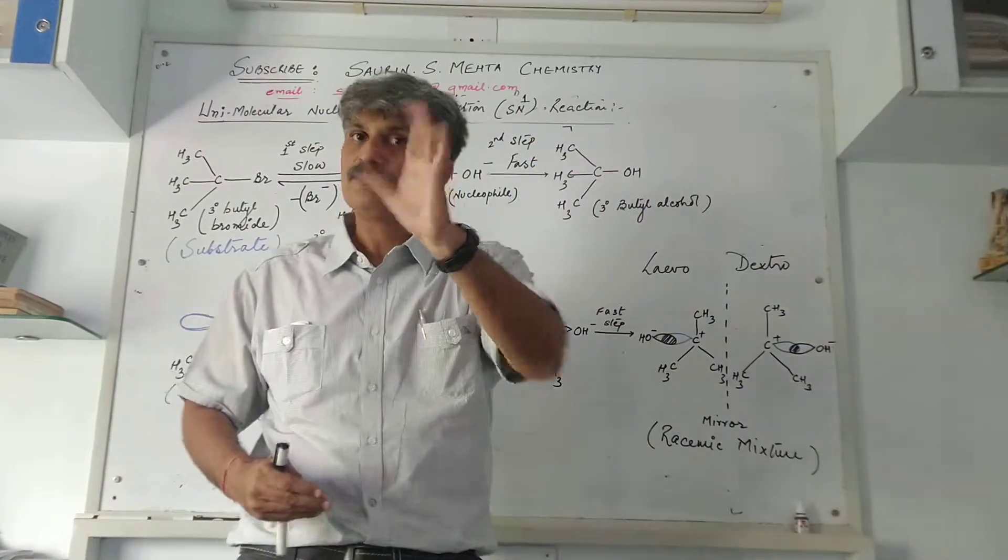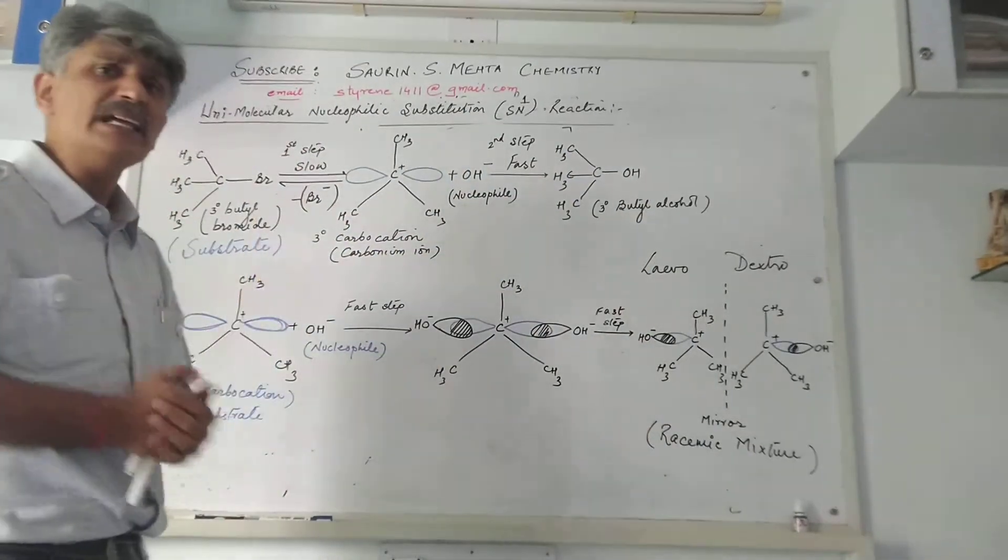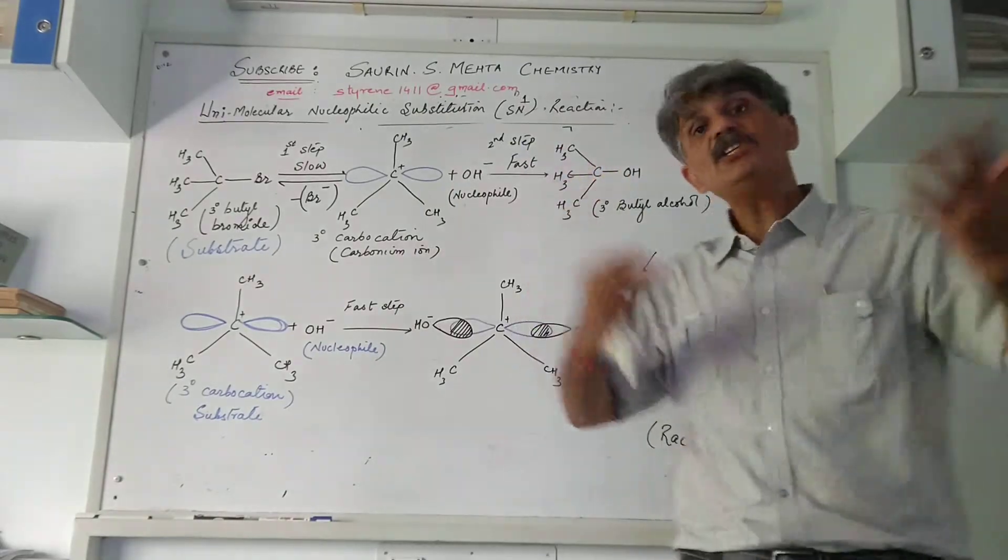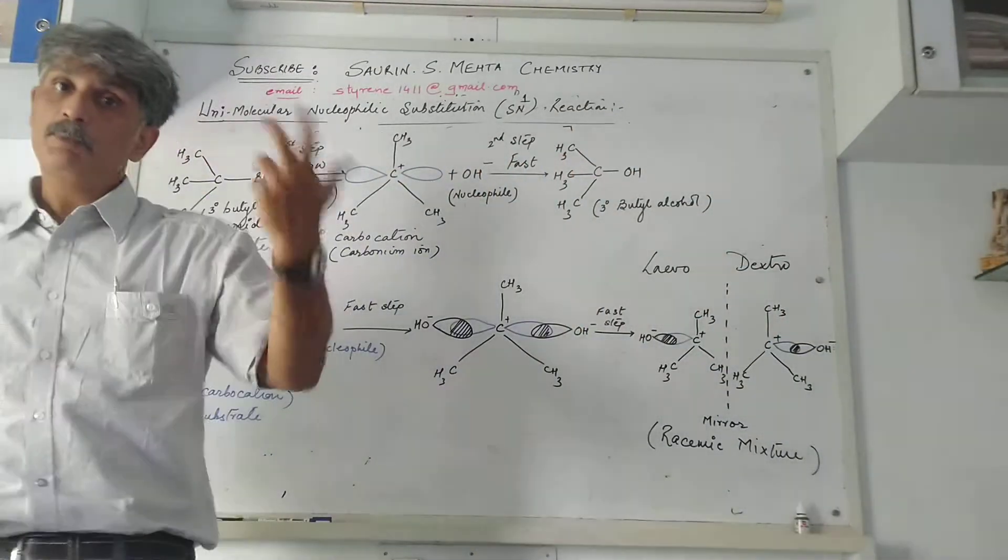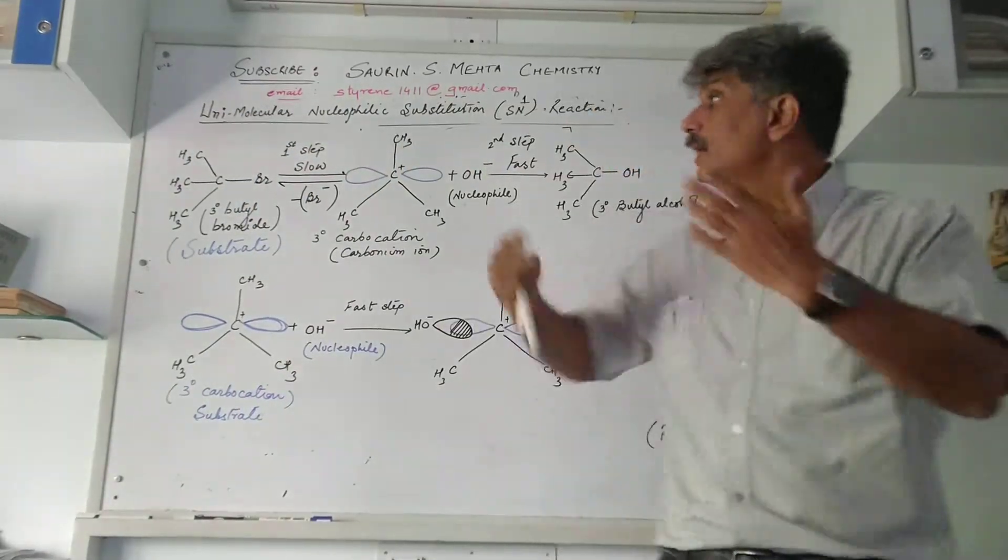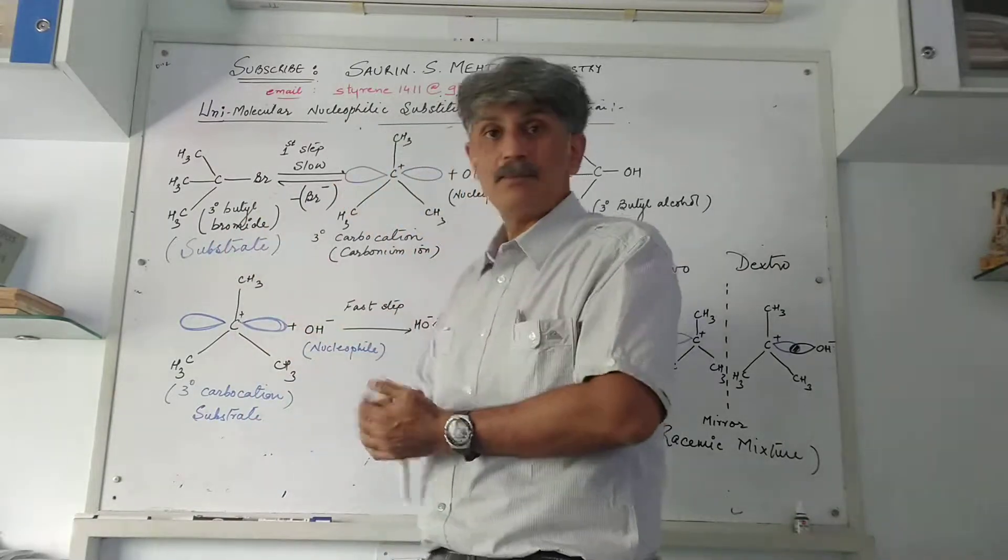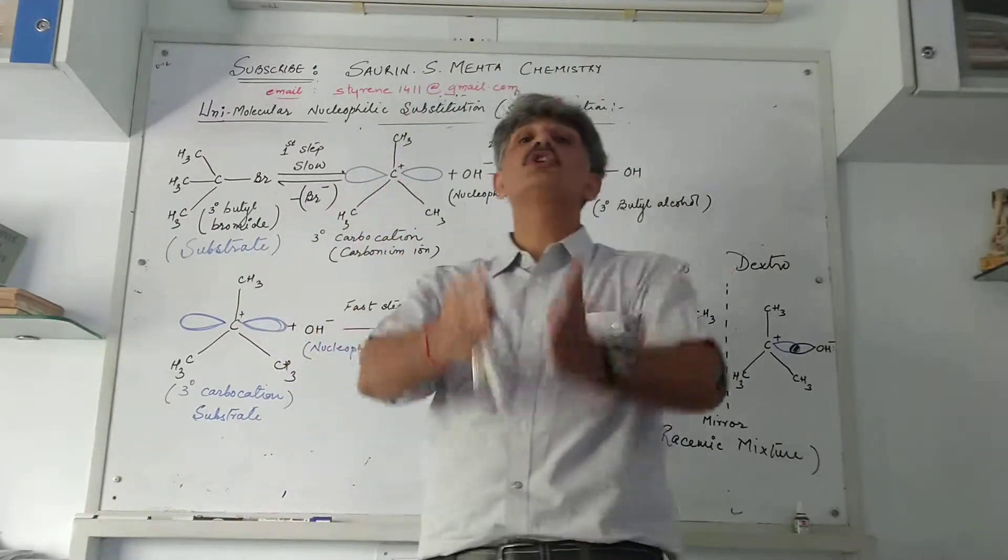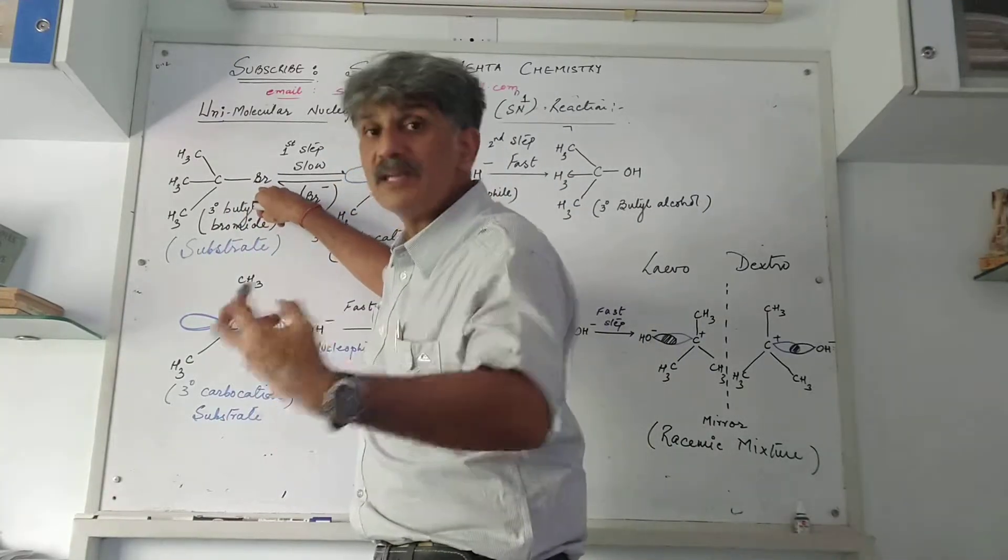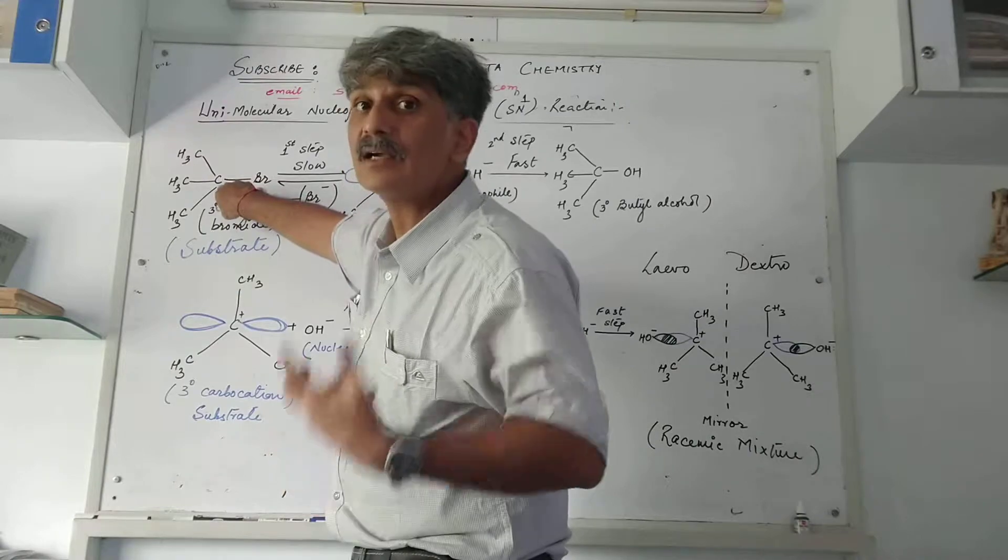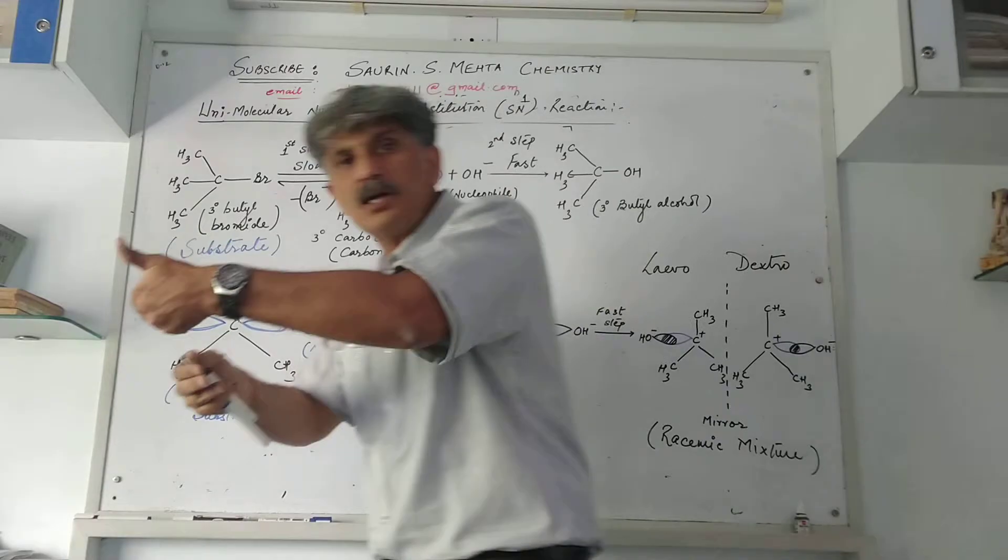Now we come to the reaction. Initially, when potassium hydroxide is added in presence of polar solvent, the substrate - tertiary butyl bromide - undergoes hydrolytic fission. The reason is that Br is more electronegative than the carbon to which it is bonded.